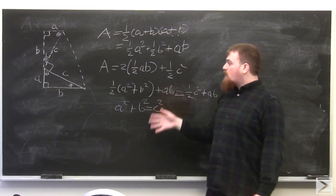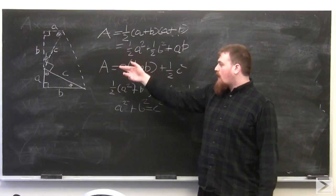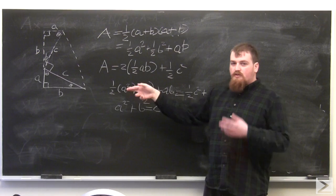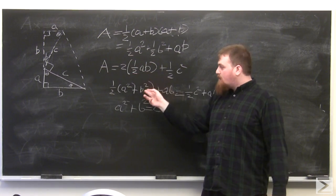Additionally, the area is also equal to the sum of the areas of all these triangles. The areas of the two right triangles are both one half AB, since